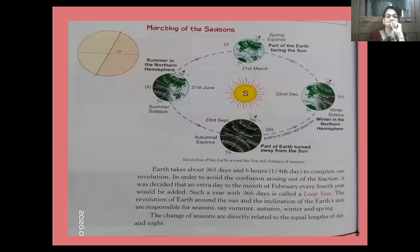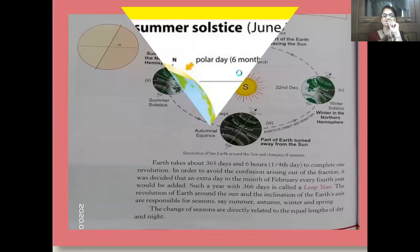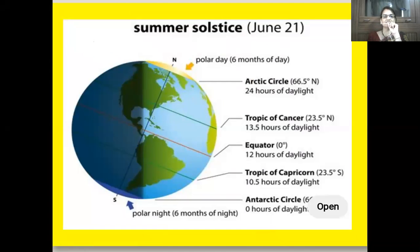The revolution of the Earth around the Sun and the inclination of Earth's axis are responsible for seasons such as summer, autumn, winter, and spring. As rotation causes day and night, revolution causes different seasons. The change of seasons is directly related to the equal lengths of day and night. These changes in seasons are associated with two situations called solstices and equinox.